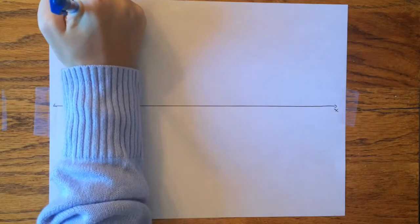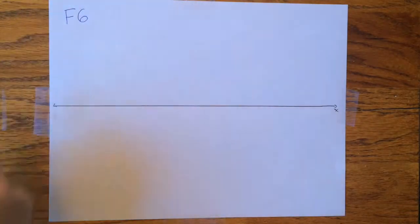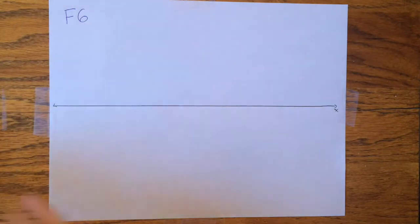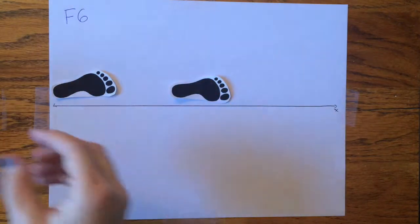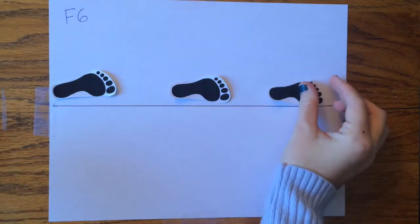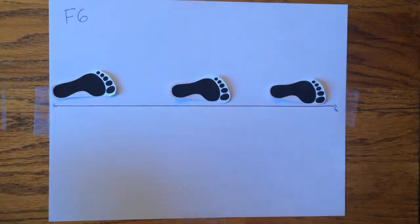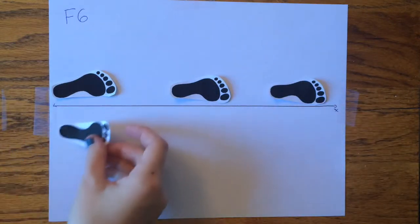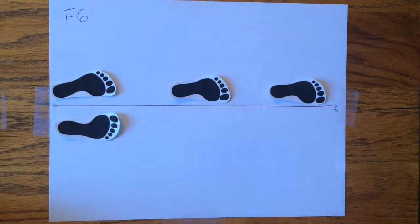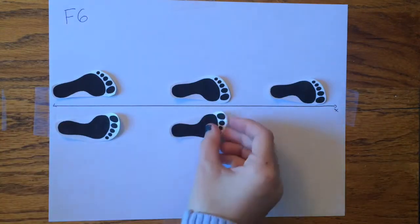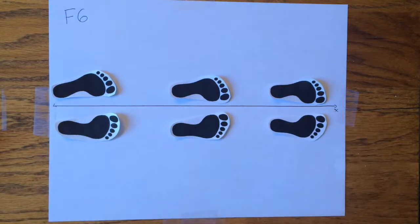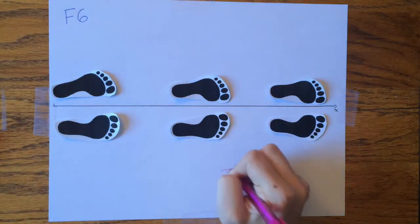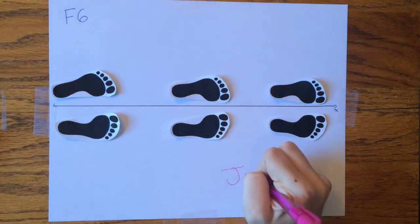F6, the next pattern, results from translation and horizontal reflection. First, the original image is translated repeatedly along the x-axis. Then, each image is horizontally reflected. This pattern resembles a jump.